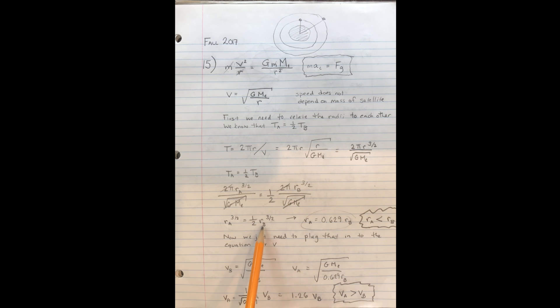If we solve for r_A, we find out that r_A is equal to 0.629 times r_B. We don't know what r_A and r_B are, but we do know this relationship, this multiplicative relationship. And more importantly, we now know that r_A is less than r_B.